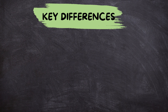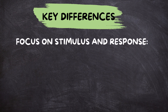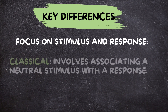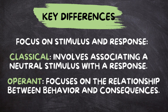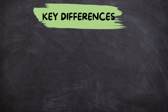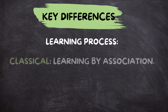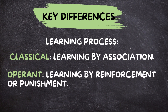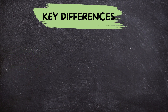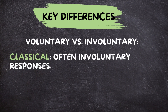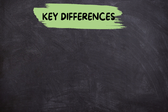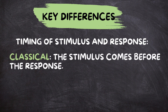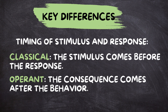Key differences. Now that we know what each type of conditioning is, let's highlight some key differences between them. Focus on stimulus and response — classical conditioning involves associating a neutral stimulus with a response, while operant conditioning focuses on the relationship between behavior and consequences. Learning process — classical conditioning is learning by association, operant conditioning is learning by reinforcement or punishment. Voluntary versus involuntary — classical conditioning often involves involuntary responses, while operant conditioning involves voluntary behaviors. Timing — in classical conditioning the stimulus comes before the response, while in operant conditioning the consequence comes after the behavior.